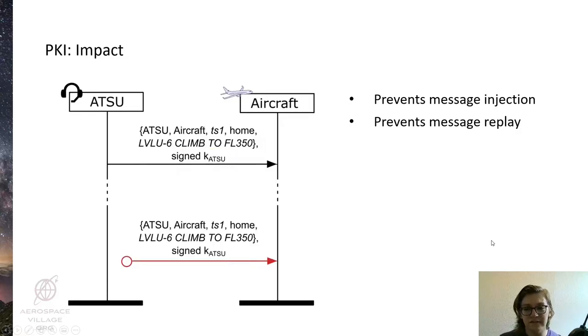It also prevents any message replay attacks thanks to the inclusion of timestamps. Here we see an attempted message replay attack in which the ATSU sends a legitimate climb to flight level 350 instruction to the aircraft, and then the attacker captures this message and attempts to replay it. However, thanks to the inclusion of this timestamp, the message will be seen as being old and the aircraft can alert the flight crew that the message has probably been replayed.